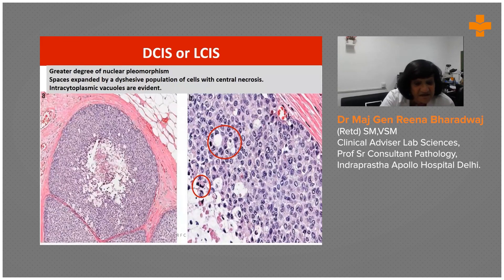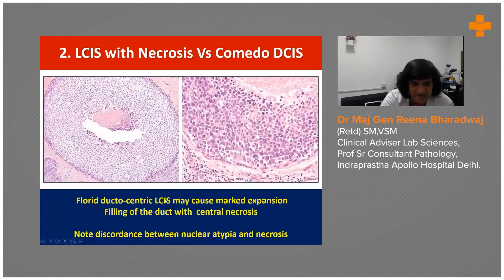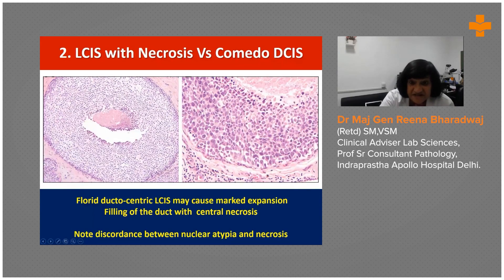Look at the shape, size — put all the features together. Discohesiveness, cells trying to run away from neighbors, then consider all the features. Now look at these two: this is such a monomorphic population, while here the cells are much larger, more pleomorphic, angulated — they are not running away from each other, they are sticking to each other. So this is a comedo DCIS while this is an LCIS with necrosis.